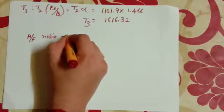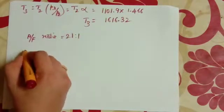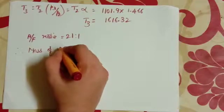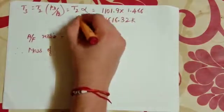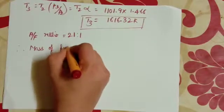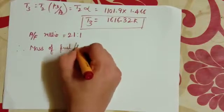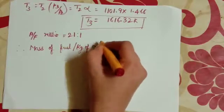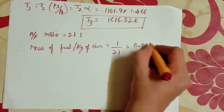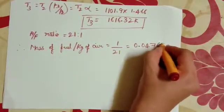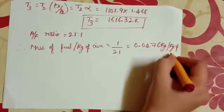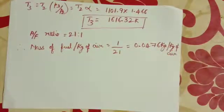Then air fuel ratio, which is given 21 to 1. Therefore, mass of fuel per kg of air is equal to 1 by 21. That is equal to 0.0476 kg per kg of air.